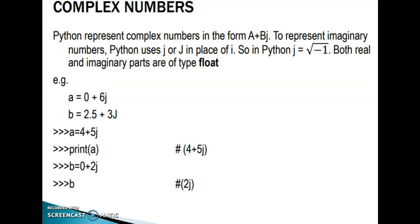In pure mathematics, i is used to identify the imaginary number, where i equals the square root of negative 1. In Python, j or capital J is used instead, so j equals the square root of negative 1. Real part is a, imaginary part is bj. Both real and imaginary parts are of type float.